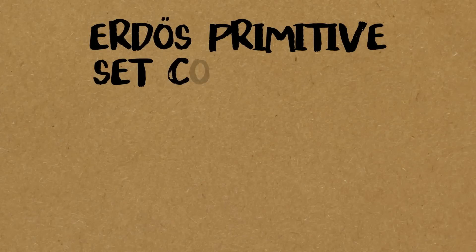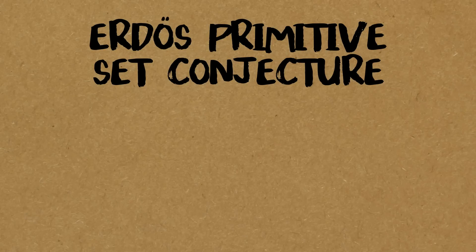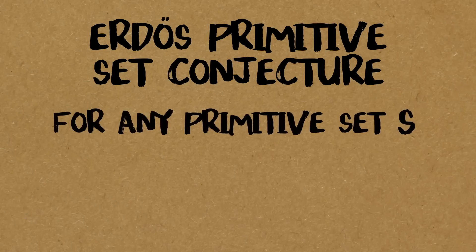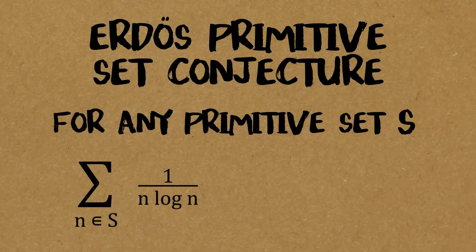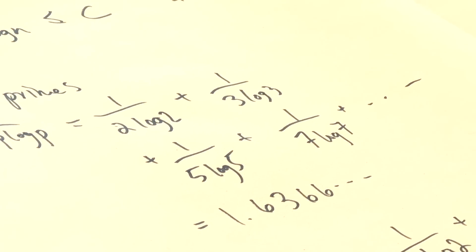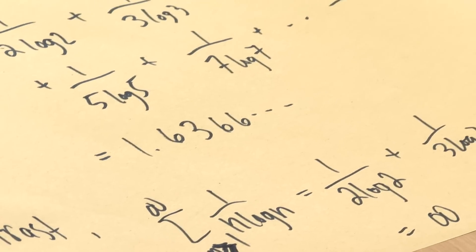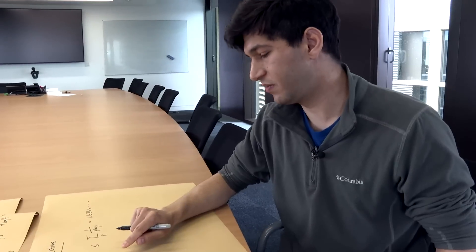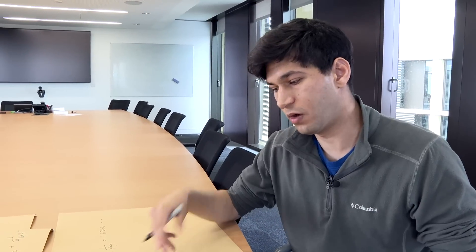The Erdős primitive set conjecture says that in the theorem, we can take C to be the sum of primes. So that is to say, for any primitive set, this sum of 1 over n log n, for n ranging in your set, is at most this sum over primes, 1 over p log p. That 1.636. Yeah, and it comes out to a finite number. 1.6366. So the conjecture is that every sum over a primitive set is at most about 1.636. And so there's no primitive set you could create that would have one of those fingerprint numbers above 1.636.